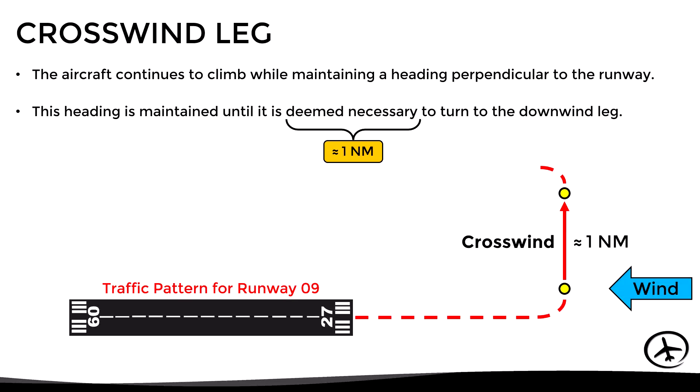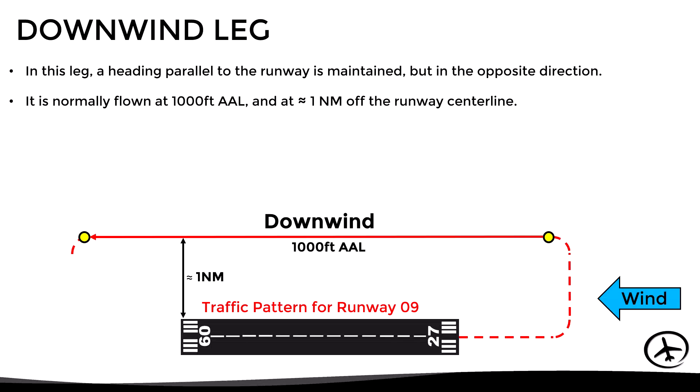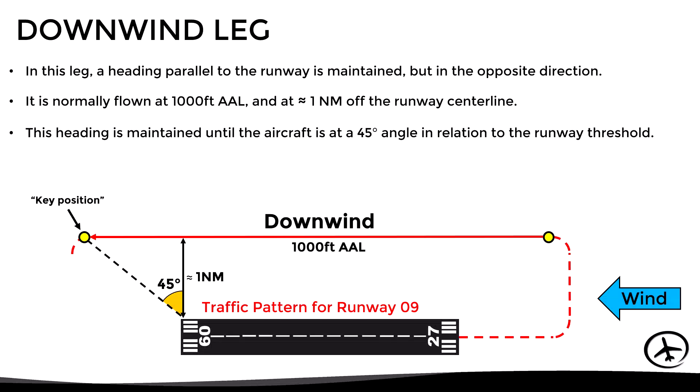However, this value may vary depending on several factors such as local procedures, type of aircraft, or terrain characteristics. After making another 90-degree turn, the aircraft starts the downwind leg. Here a heading parallel to the runway is maintained but in the opposite direction, and typically by this time the aircraft would have reached the pattern altitude, which is normally 1,000 feet above the airport level.